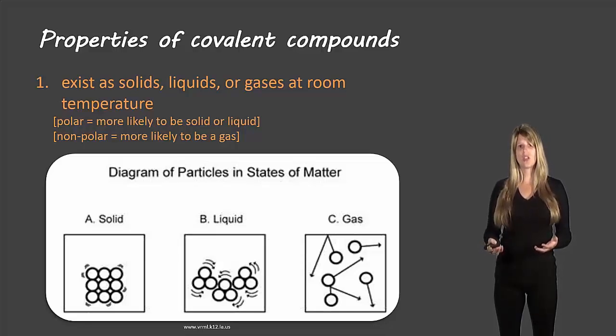It's similar to what we saw with ionic bonds. When you have charges, which would be caused by polar covalent compounds, the positives and negatives are attracted together and form a big glob of compounds.